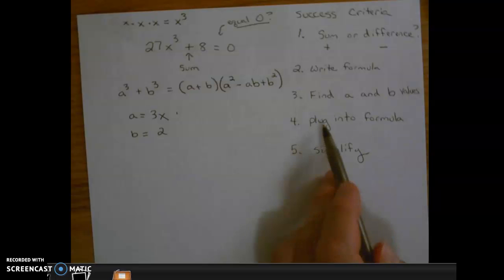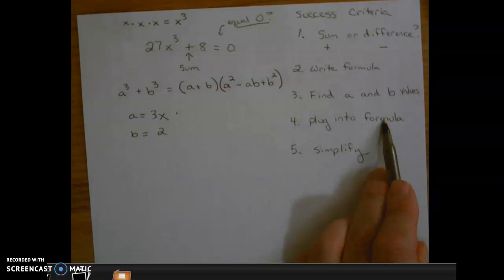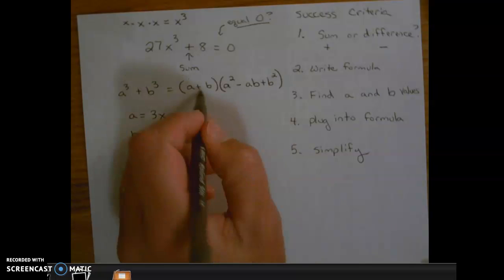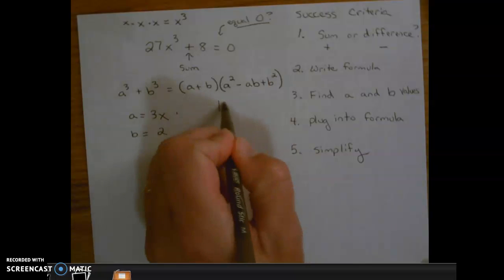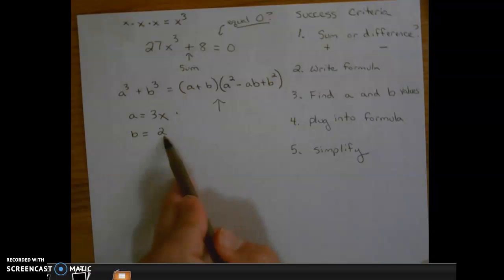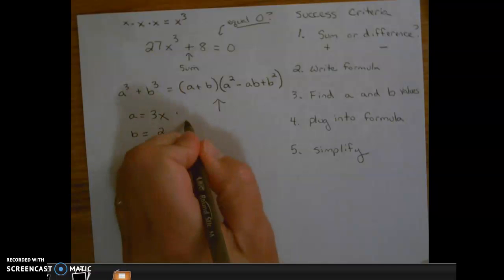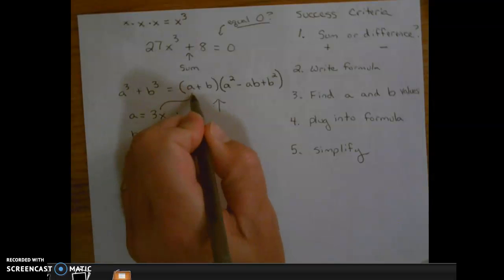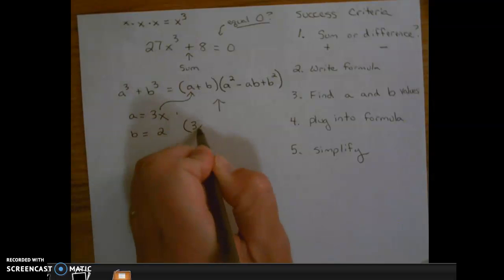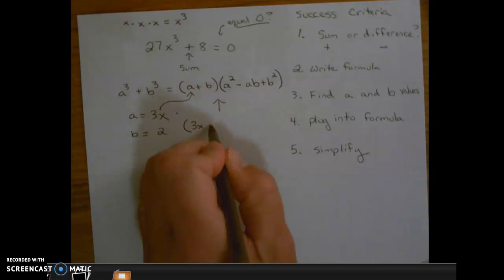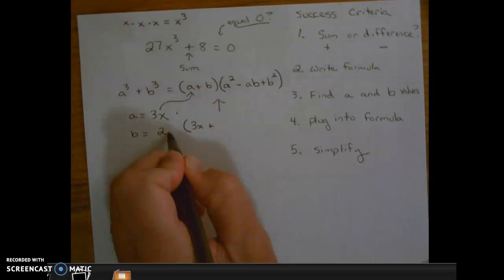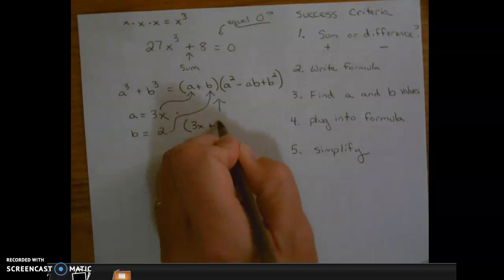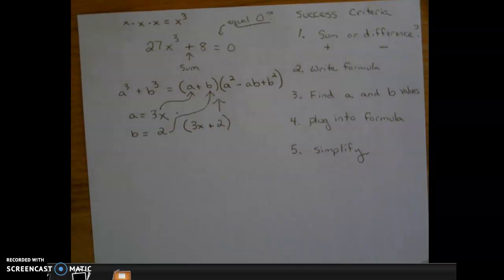So now we're going to plug into formula. Here's where we're going to get our answer. We're going to take this formula and plug these values in. So 3x goes in for a, bring down the plus, 2 goes in for b. And there's our first factor.